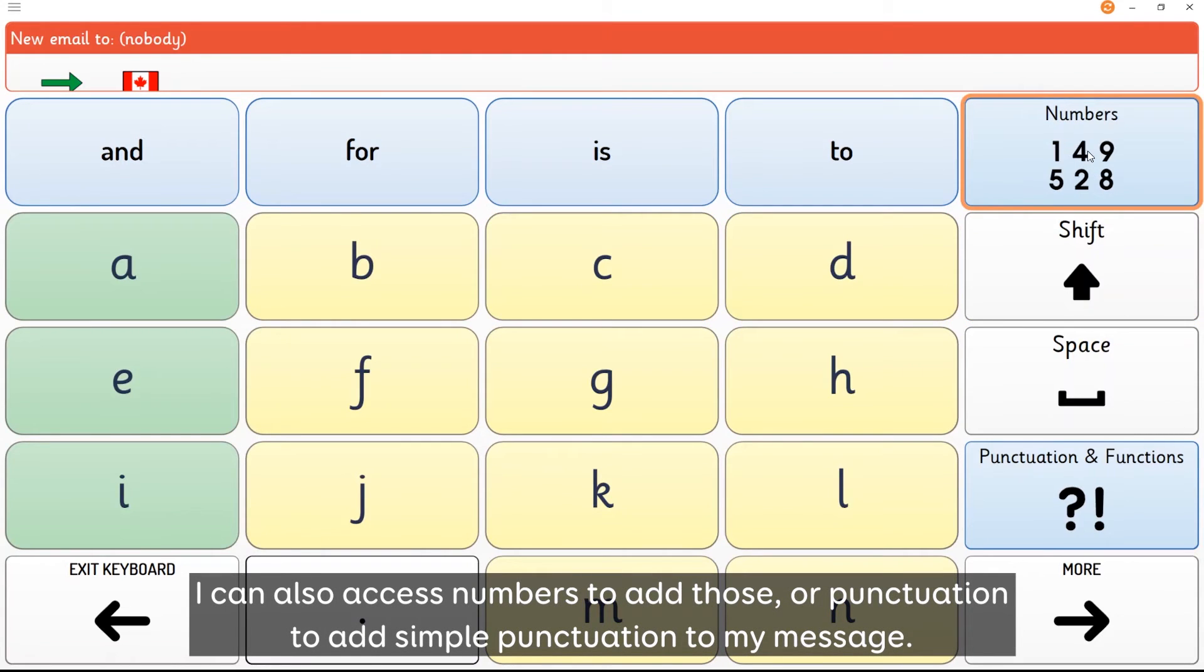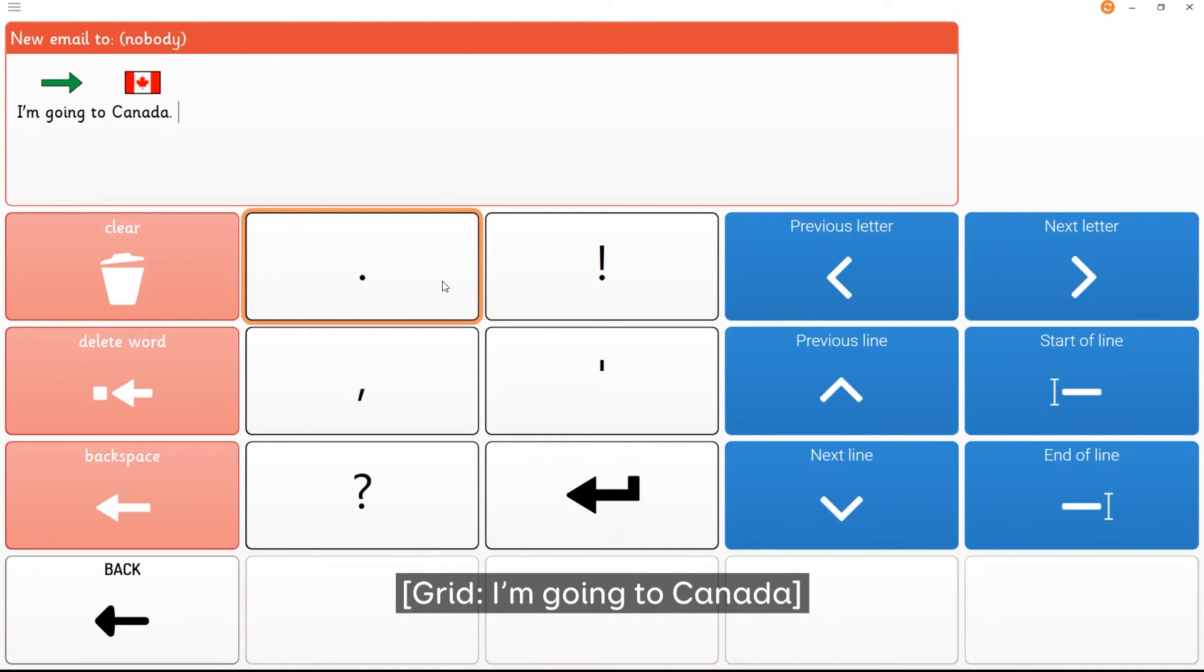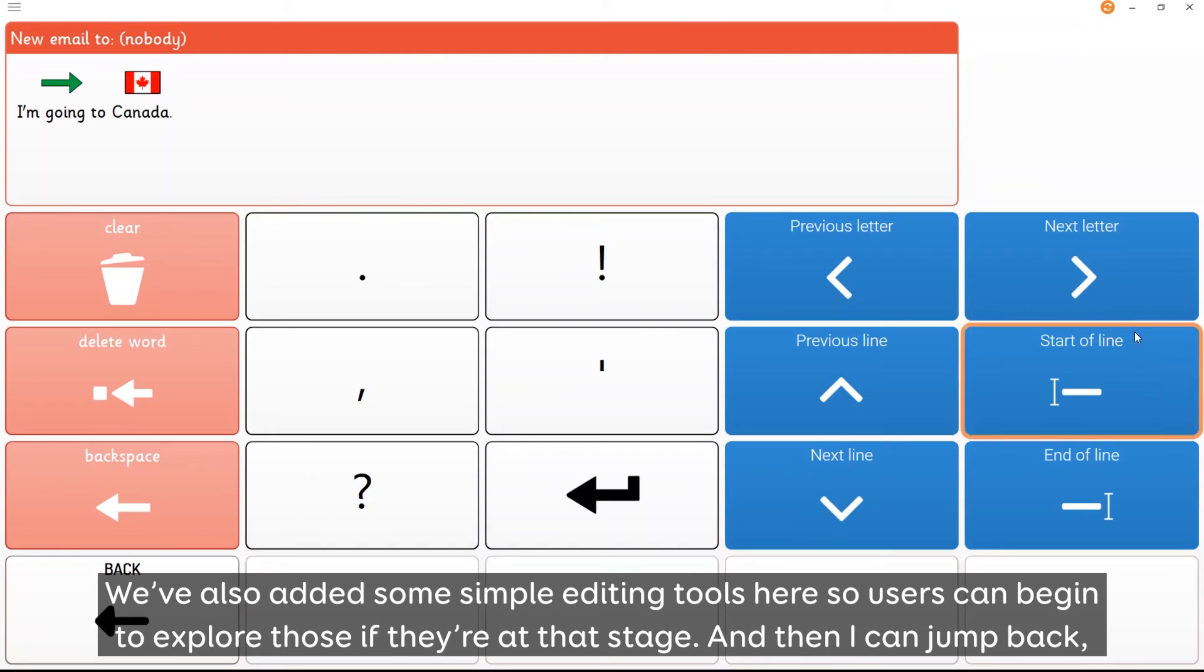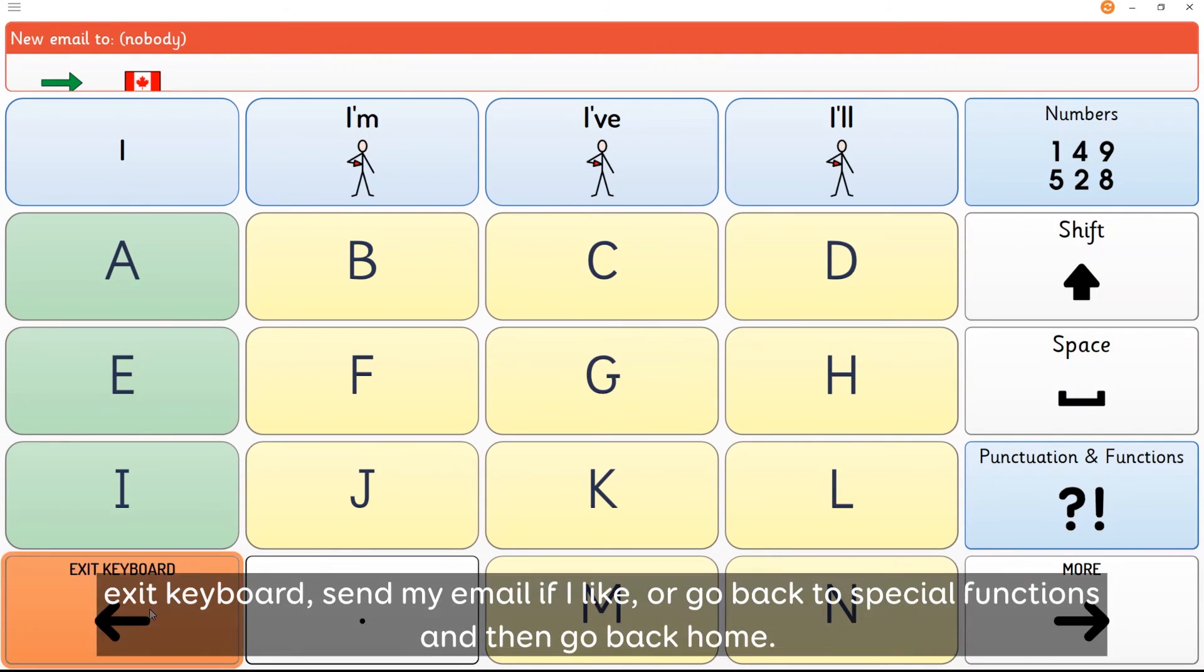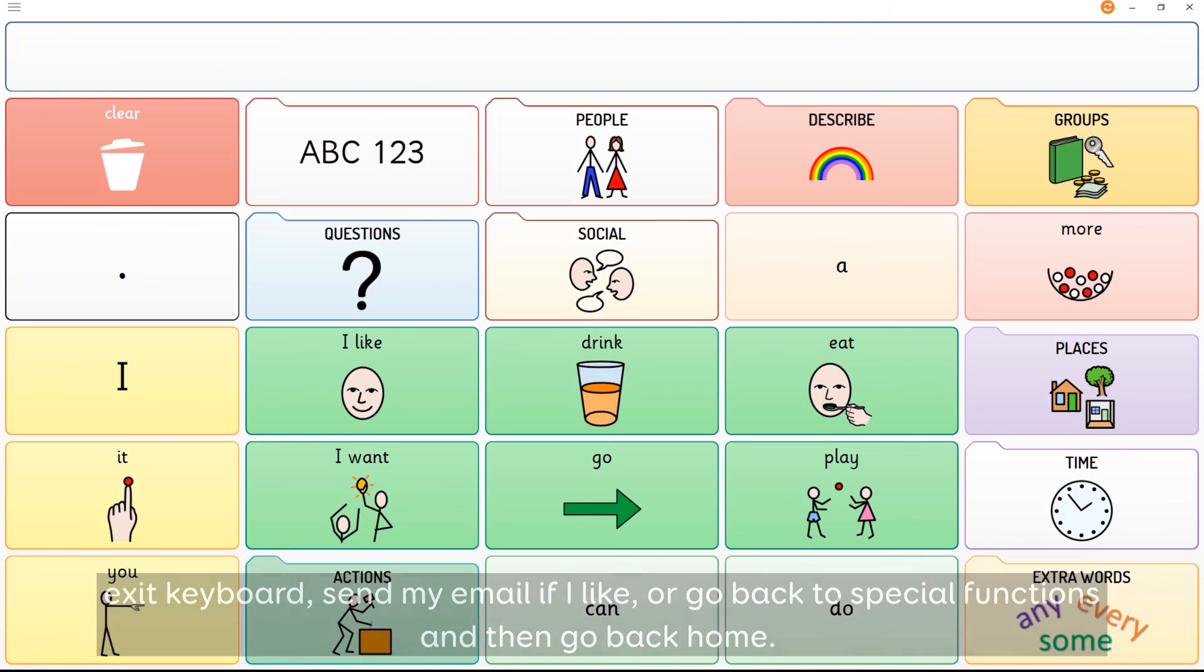I could also access numbers to add those or punctuation to add simple punctuation to my message. We've also added some simple editing tools here so that users can begin to explore those if they're at that stage. And then I can jump back, exit keyboard and send my email if I like, or go back to special functions and then go back home.